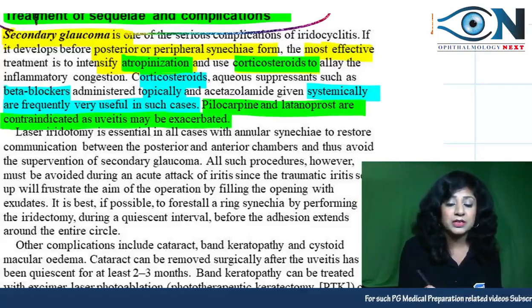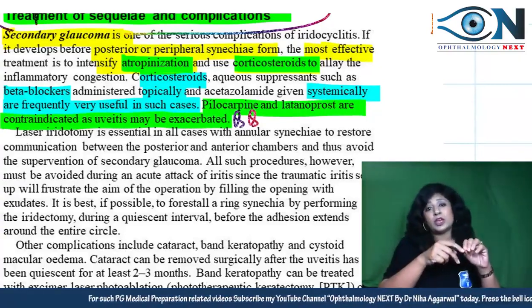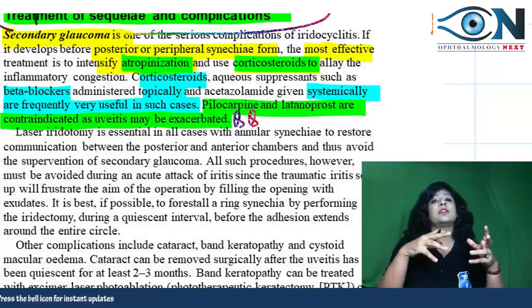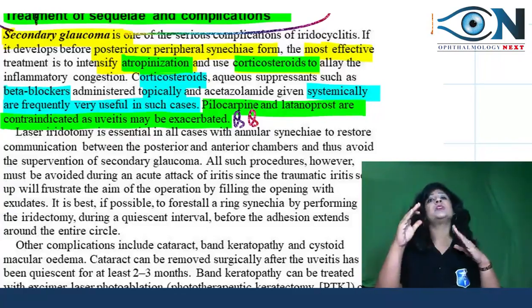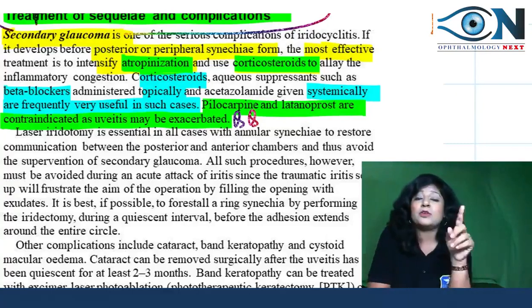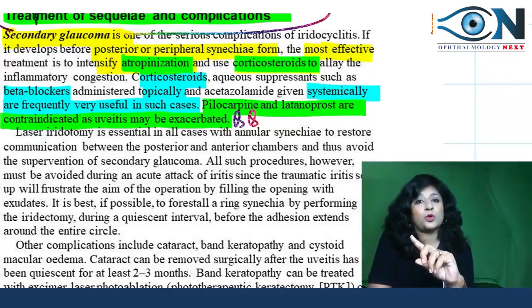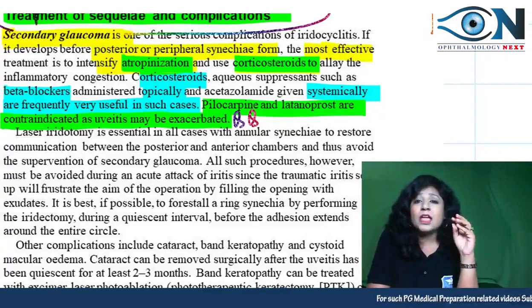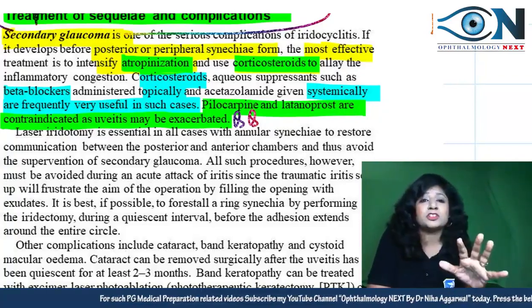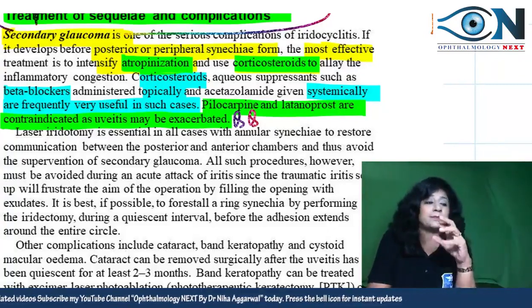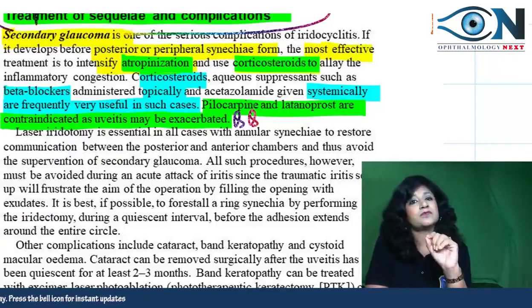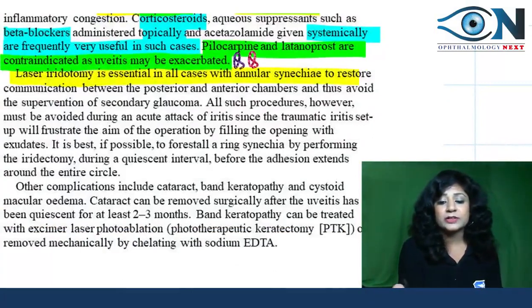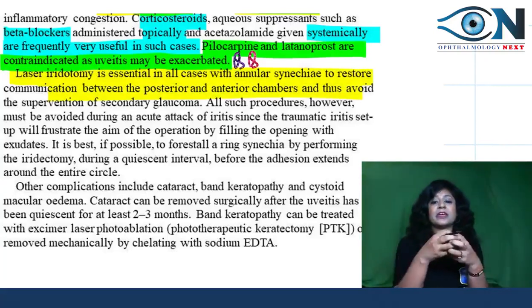Pilocarpine and latanoprost are contraindicated in uveitis as they may exacerbate it. This again highlights the importance of differentiating acute anterior uveitis from angle closure glaucoma — pilocarpine is the drug of choice in angle closure glaucoma but must be avoided in uveitis. Laser iridotomy is essential in all cases with annular synechiae, to restore communication between posterior and anterior chambers.